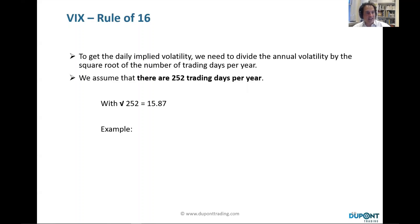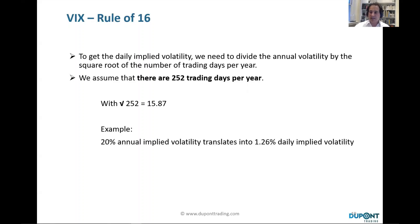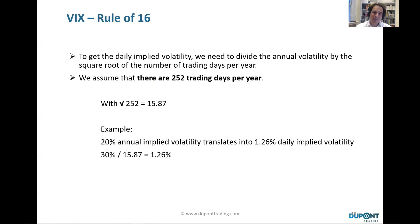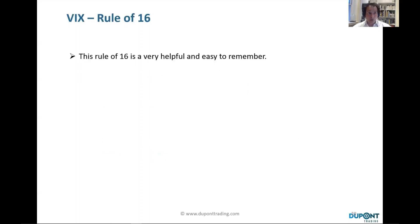To get the daily implied volatility using the Rule of 16, we divide the annual volatility by the square root of the number of trading days per year. A normal year has roughly 252 trading days, and the square root of 252 is roughly 15.87 — so approximately 16. For example, a 20% annual implied volatility translates into a 1.26% daily implied volatility.